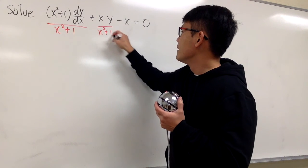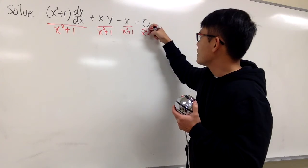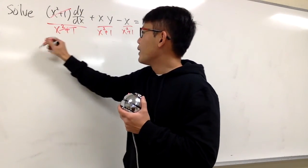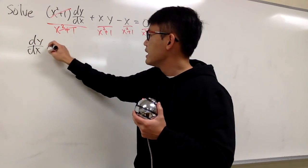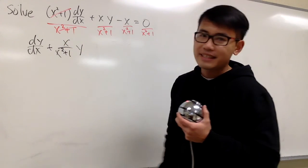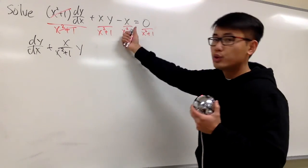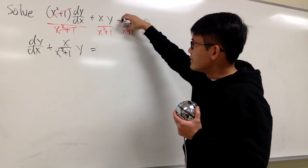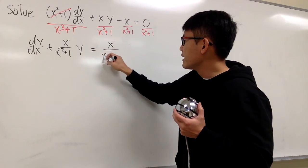We divide everything here as well. I will also have to divide the right-hand side by x squared plus 1, but it's 0 anyway. So on the left we get dy/dx, and the second term is plus x over x squared plus 1 times y. Moving that term to the right-hand side, since it was negative, we get positive x over x squared plus 1.